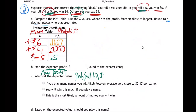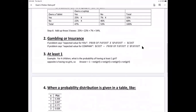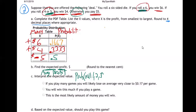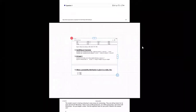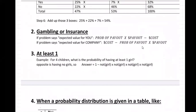Let me flash back real quick to the notes. Here's the exam two notes, and I changed my description down here. Gambling and insurance. If the problem says expected value for you, do the probability of payout times the payout minus the cost. If it says expected value for the company, then do the cost minus the probability of payout times the payout dollars.